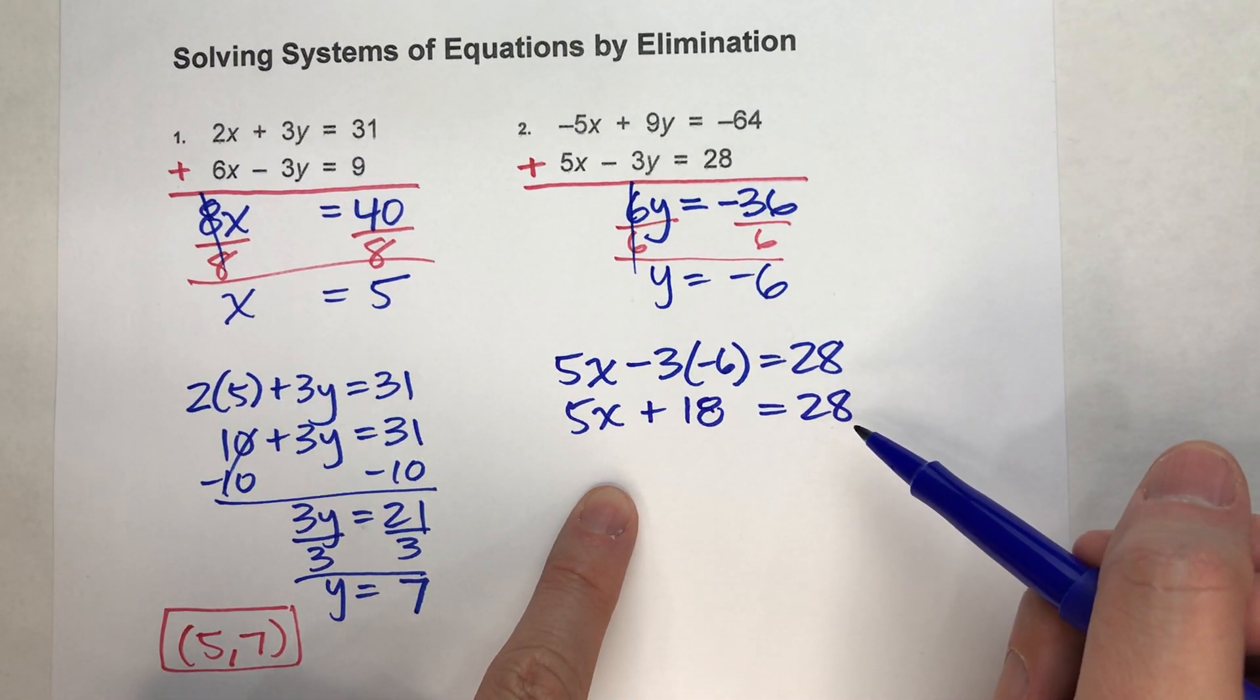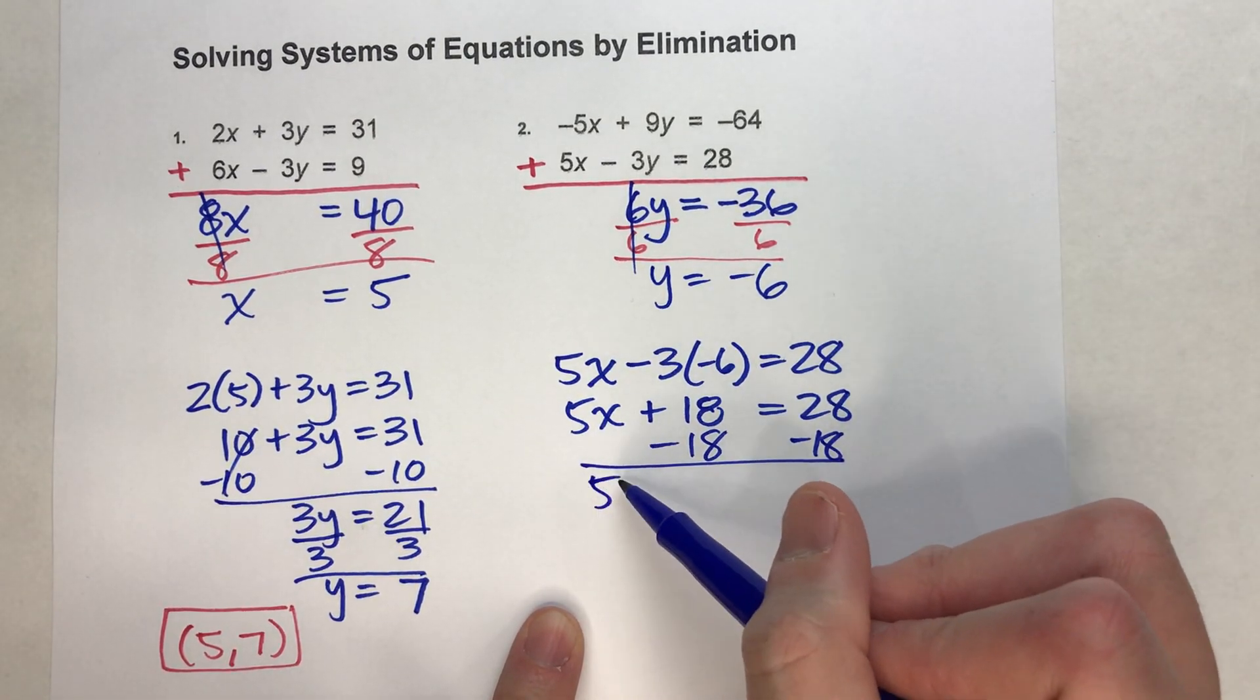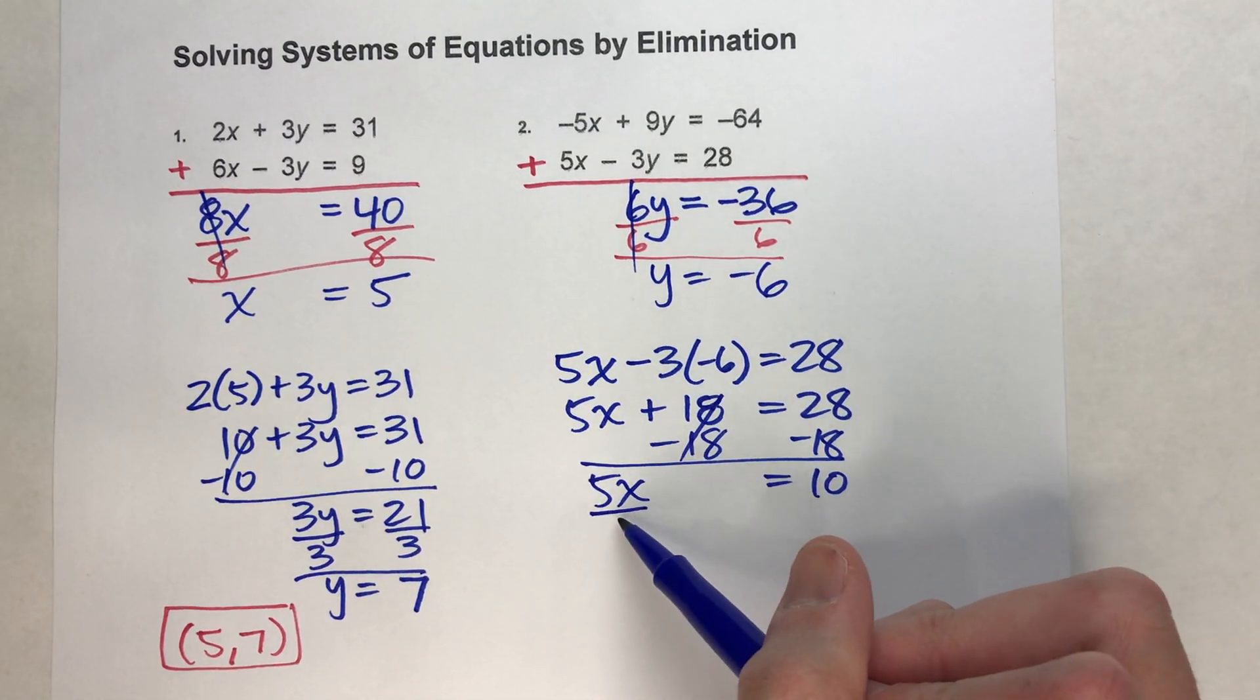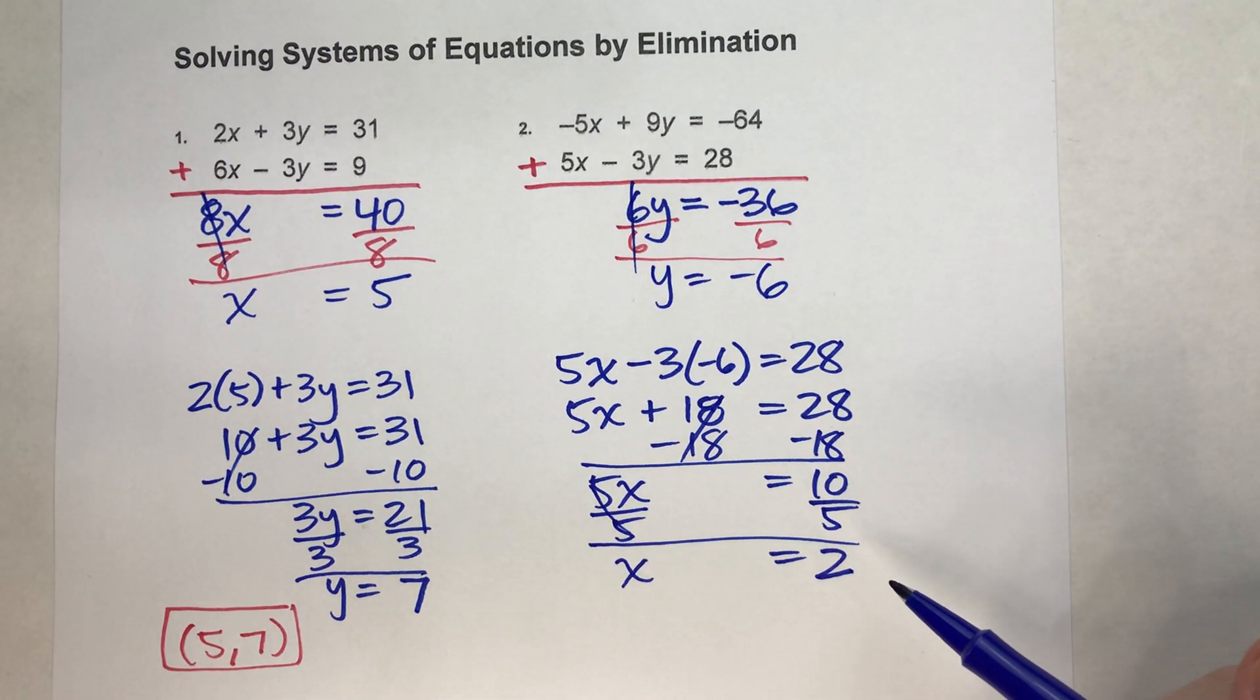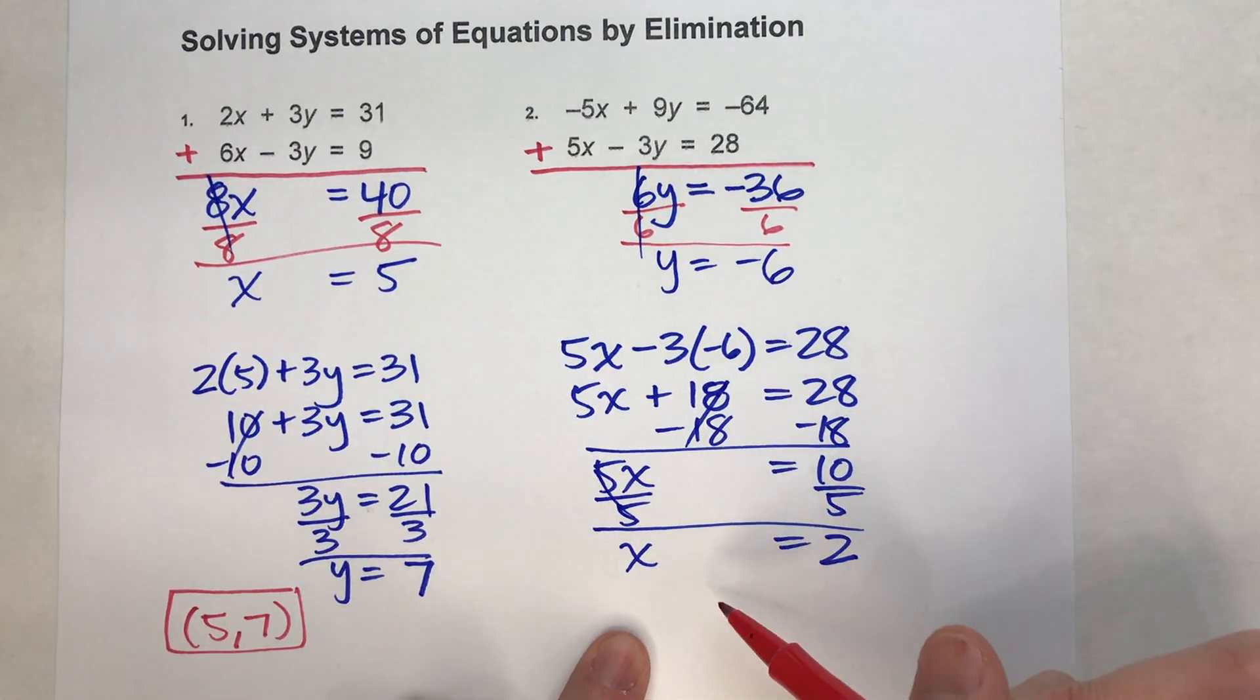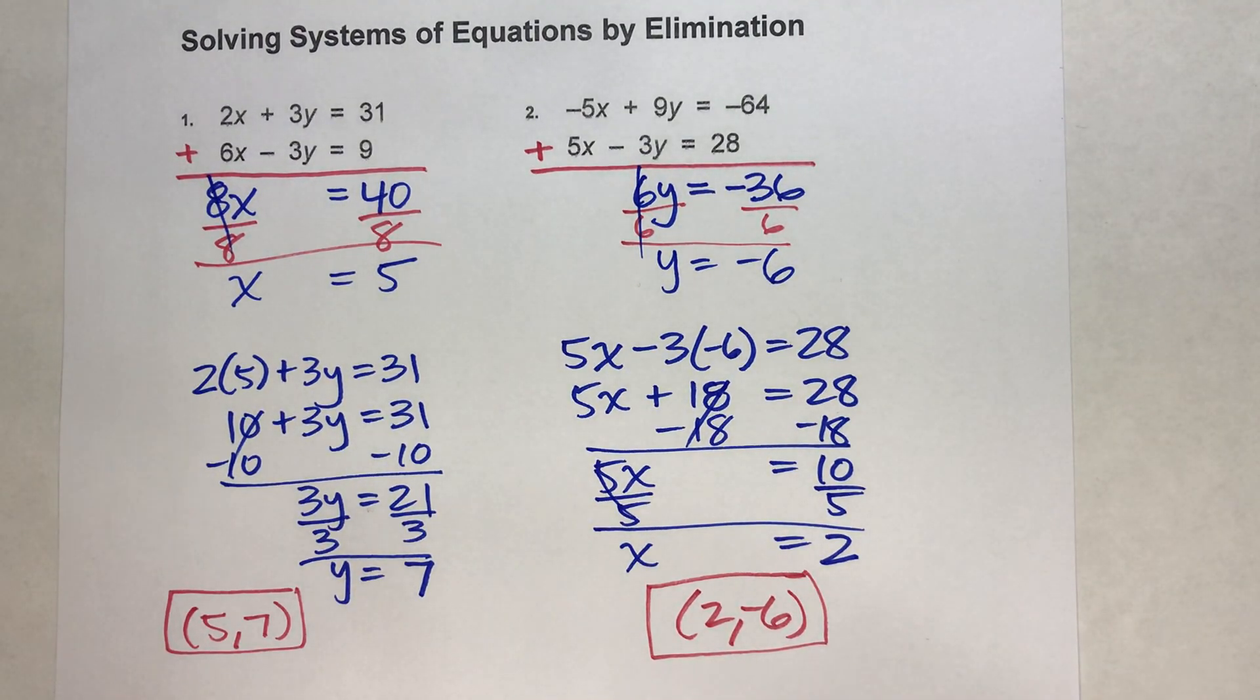One more algebraic equation to figure out what that last variable is. I'm going to subtract 18 on both sides. I get 5x equals 10, divide both sides by 5, I end up getting x equals 2. So I've just gotten my solution: x is 2, y is negative 6. And that's the solution to the system.